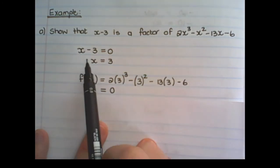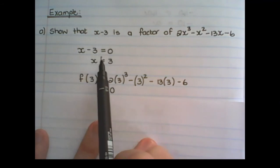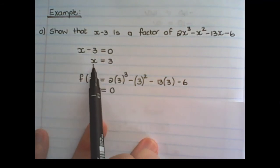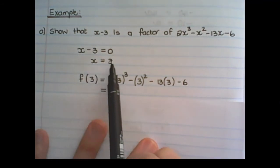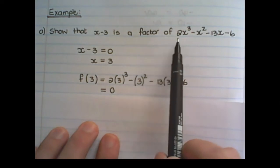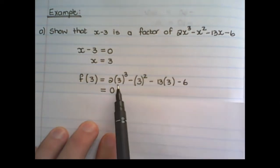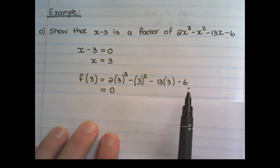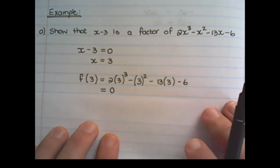So we do the same as before, with the remainder theorem. We set x-3 equal to zero, and then we solve for x. We substitute this value of x in the expression. So in the place of x, we have 3, and when I have substituted 3, the remainder is zero.